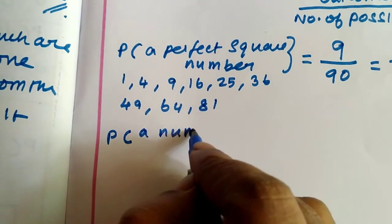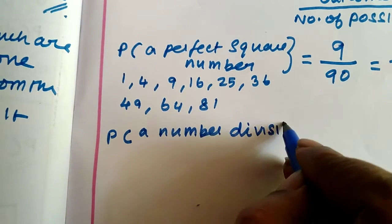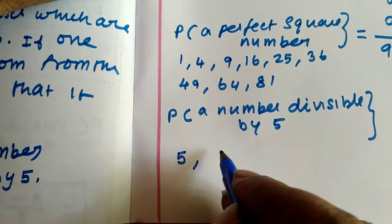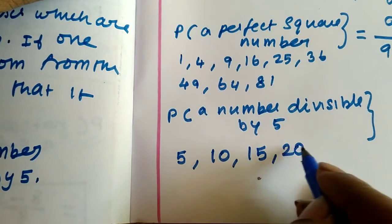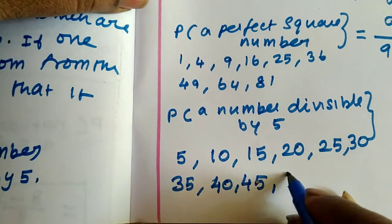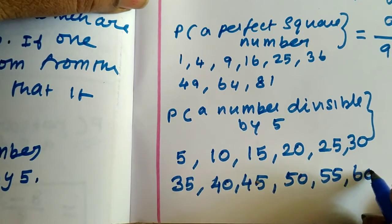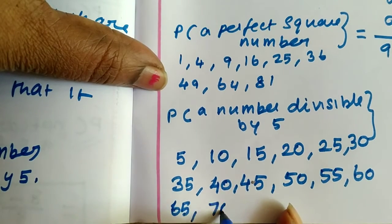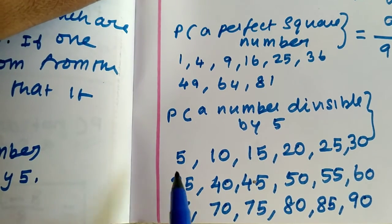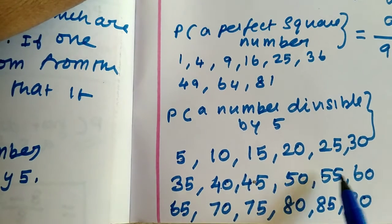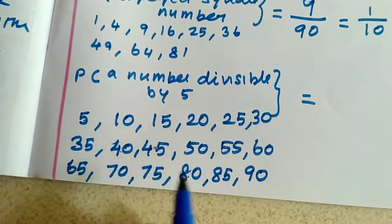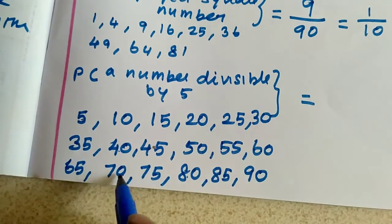Probability of getting a number divisible by 5: 5, 10, 15, 20, 25, 30, 35, 40, 45, 50, 55, 60, 65, 70, 75, 80, 85, 90. Total number of possible outcomes is 90.